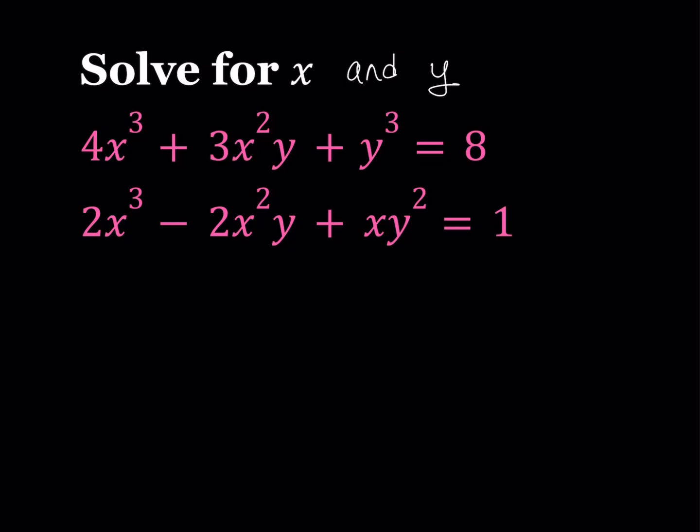Hello everyone. In this video we're going to be solving a cubic system. We have 4x³ + 3x²y + y³ = 8 and 2x³ - 2x²y + xy² = 1, and we're going to be solving for x and y values.